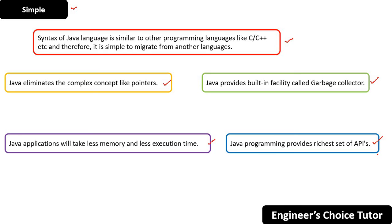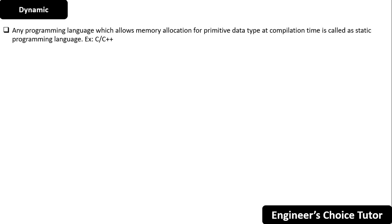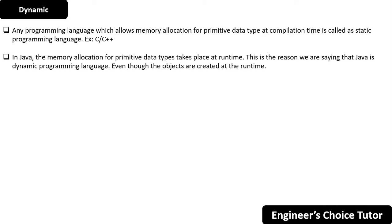These are the reasons which prove that Java is a very simple language. The next buzzword is dynamic. Any programming language which allows memory allocation for primitive data types at compilation time is called a static programming language — for example, C and C++. In Java, memory allocation for primitive data types takes place at runtime, which is why Java is called a dynamic programming language.